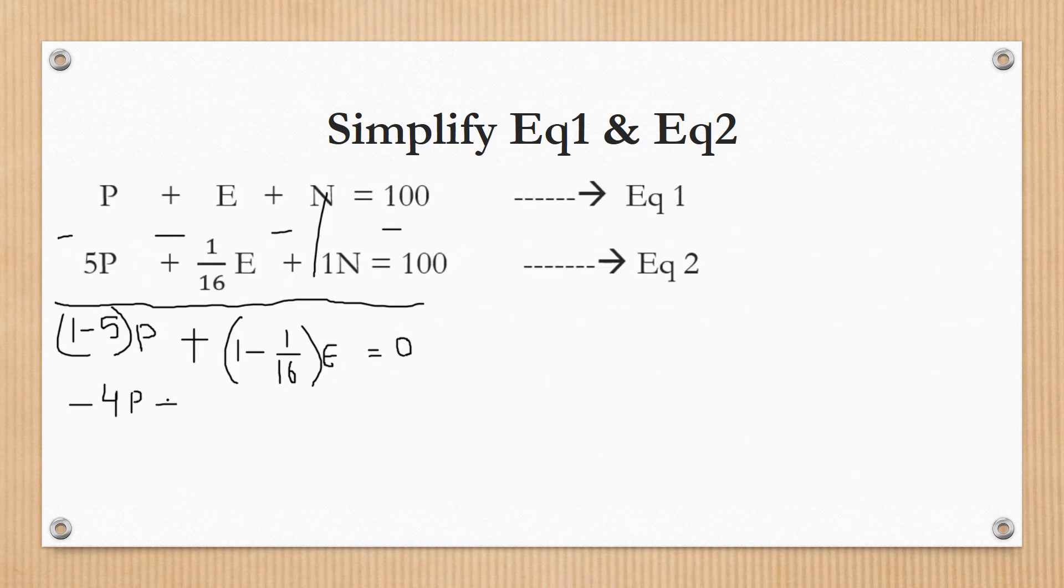1 minus 1/16, take LCM 16. 16 minus 1 is 15 divided by 16. So 15/16 of the eraser equals 0. Keep the eraser as 15/16.